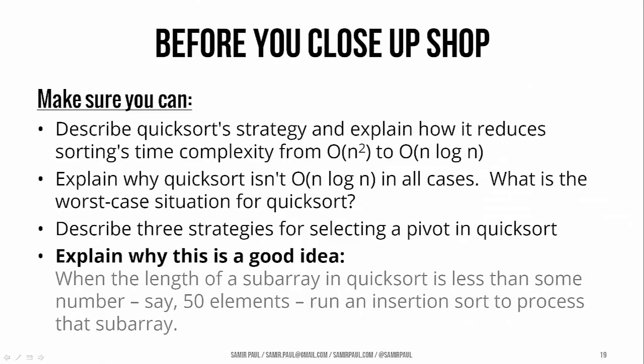Okay, before you close up shop, make sure you can tell me how quicksort works and how it brings sorting's complexity from N squared down to N log N. Think of a worst case scenario for quicksort, which would actually force it back up to N squared runtime. And see if you can think up three different strategies for how you might select a pivot in quicksort and think about what impact that might have.